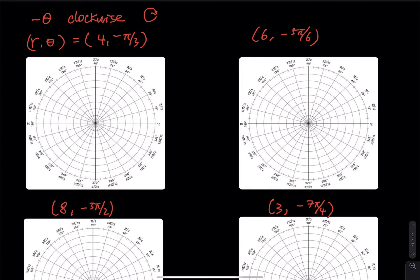Now I've changed all the theta from positive to negative. If you have a negative angle, you have to go clockwise. The first one is r equals to 4: 0, 1, 2, 3, 4. We are going from 0 in the clockwise direction. Pi over 3 is normally 60 degrees, but with negative pi over 3 you go down 60 degrees — that's 360 minus 60 equals 300 degrees, right here. From 4 you stop right there and put the point. r equals to 4 is from the origin to that point.